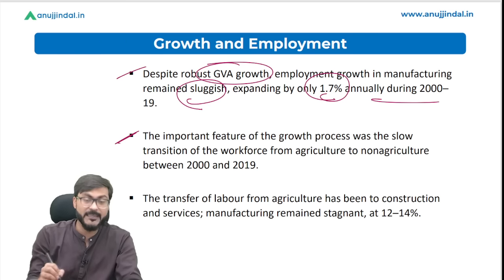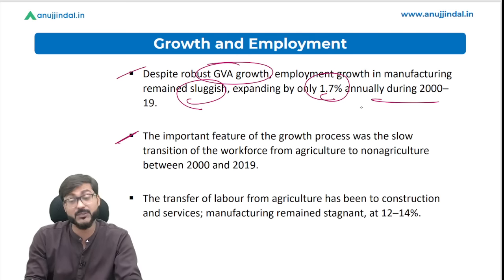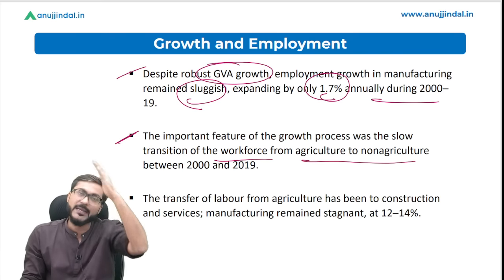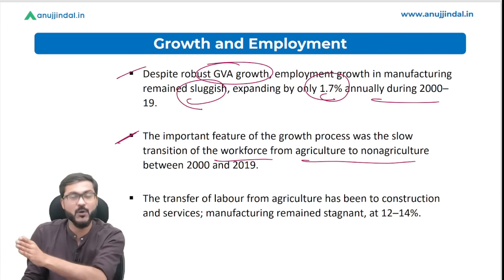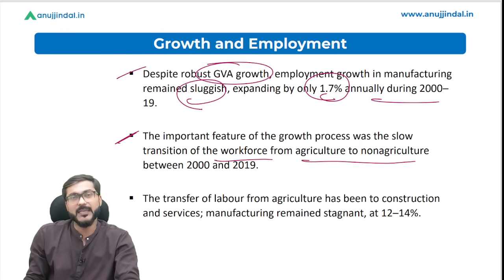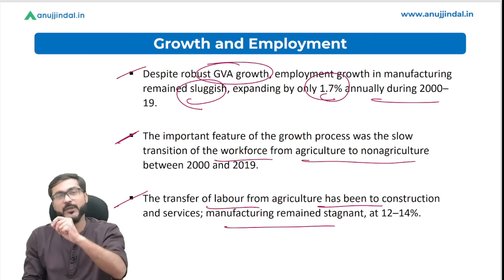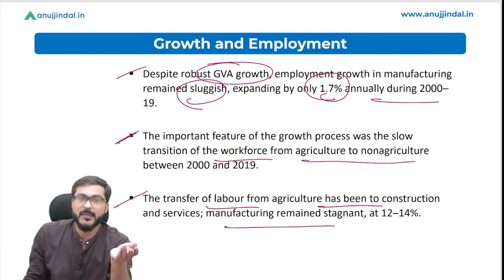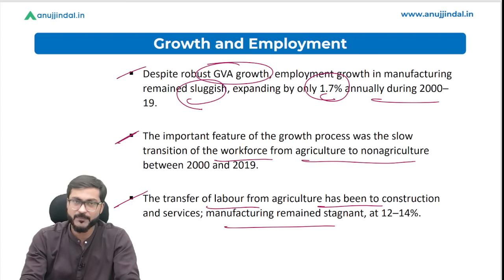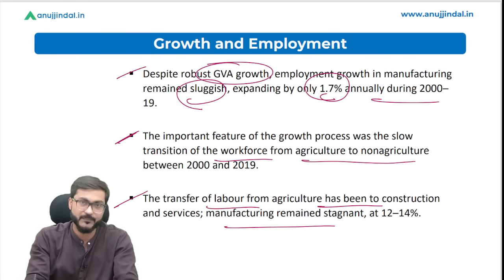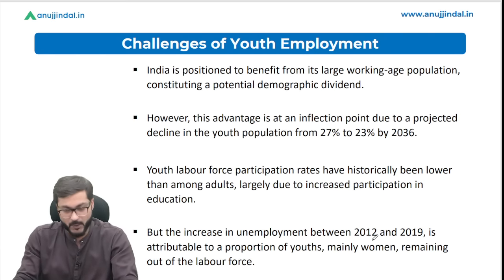An important feature of the growth process was the slow transition of the workforce from agriculture to non-agriculture sectors, which is why growth and employment remain sluggish. The transfer of labor from agriculture has been predominantly to construction and services, while manufacturing remains stagnant at 12 to 14 percent due to limited manufacturing capacities in the country.